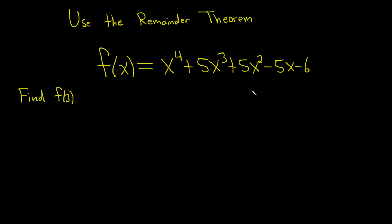To use the remainder theorem to find f of 3, we have to realize that f of 3 is actually equal to the remainder when you divide this whole thing by x minus 3. So all we have to do in this problem is use synthetic division to divide this function by x minus 3 and the remainder is actually equal to this. That's what the remainder theorem says.